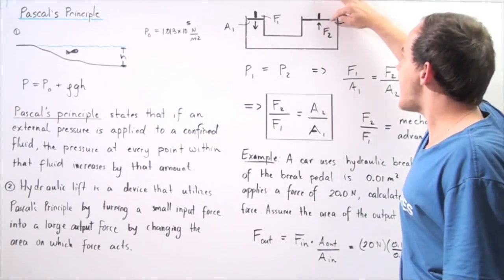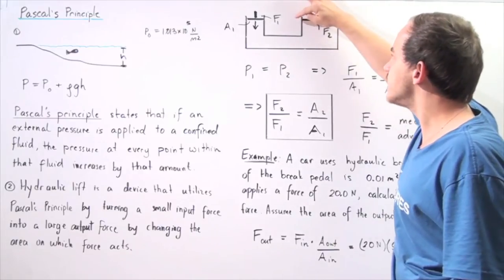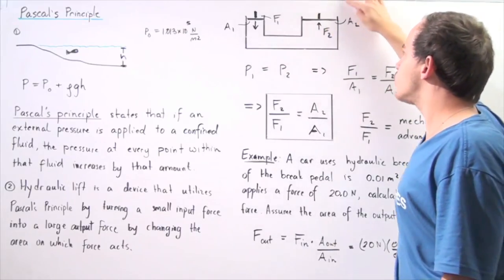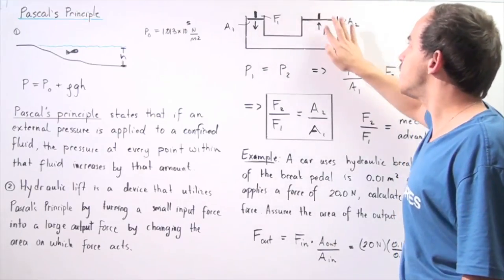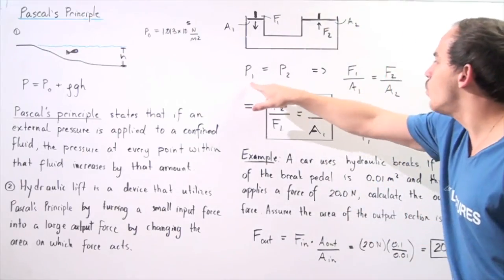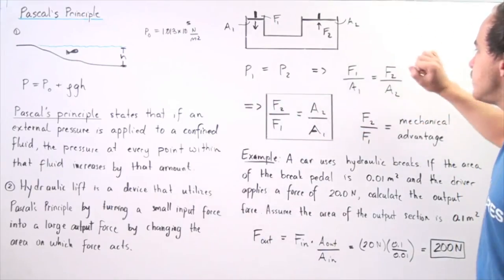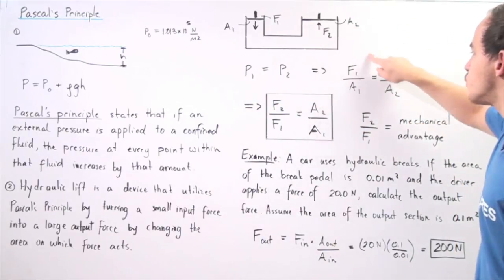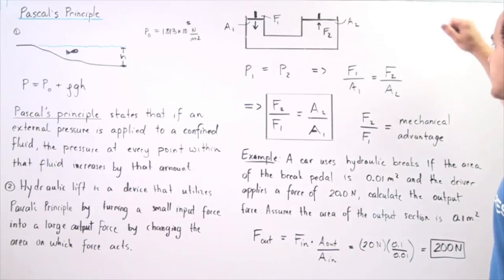If we increase the area of this piston, that means we also have to increase the force that this piston feels by the same proportional amount. P1 is equal to P2, which means the ratio of force 1 to area 1 is equal to the ratio of force 2 divided by area 2.